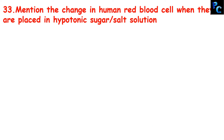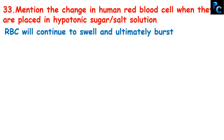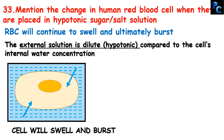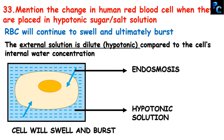Mention the changes in human red blood cells when they are placed in a hypotonic sugar or salt solution. The RBC will continue to swell and ultimately burst. When the external solution is dilute — that is hypotonic — compared to the cell's internal water concentration, water starts to enter the cell, as a result of which the cell swells and ultimately bursts. This process is called endosmosis. In a dilute hypotonic solution water concentration is higher outside, so it moves from outside to inside.